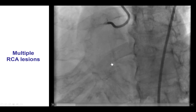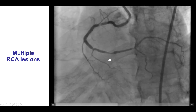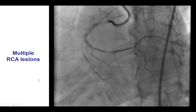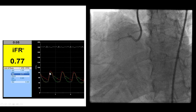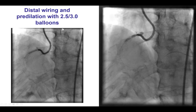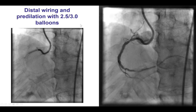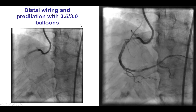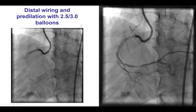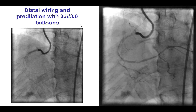Those lesions appeared to be significant, but we confirmed with IFR, which was 0.77, and when we pulled the wire back, there was remaining good equalization. We therefore decided to proceed with PCI of the right coronary artery.